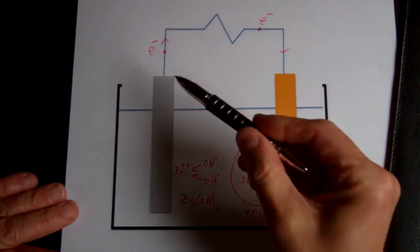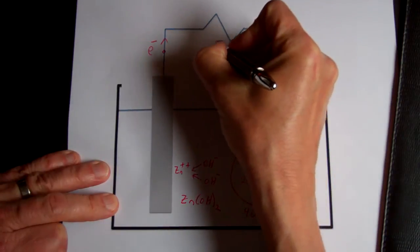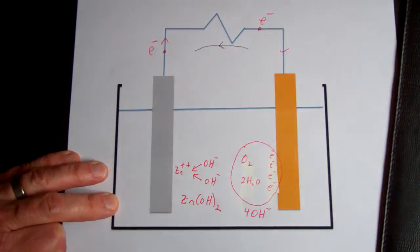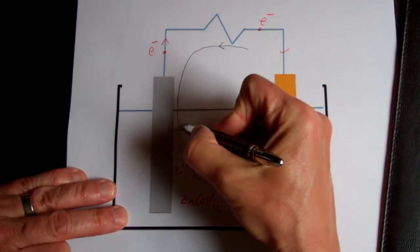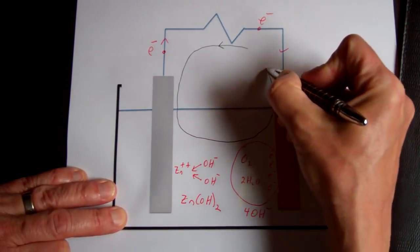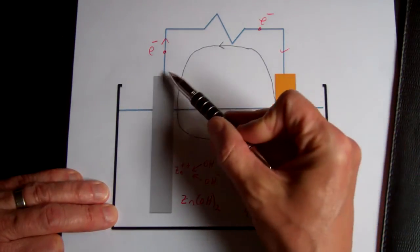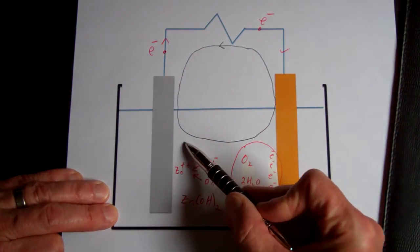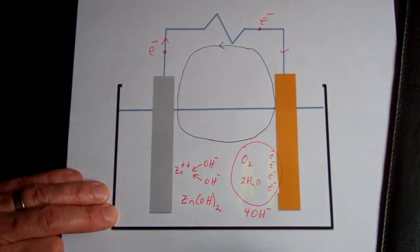So, electrons are flowing from the zinc to the copper electrode. So, the actual current flow, which is the flow of positive charge, will be in the opposite direction. So, for current to flow, there's going to have to be a continuous current flow through the load, into the zinc electrode, through the solution, into the copper electrode, and back into the load.